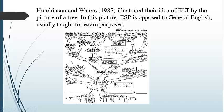Each of these subject areas is further divided into three branches: English for Academic Purposes and English for Occupational Purposes, as you can see in each of them. An example of English for Occupational Purposes, for English for Science and Technology, is English for technicians, for example.